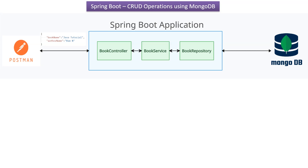On the left side you can see Postman. Using the Postman client we can send book details in JSON format. The Spring Boot application converts the JSON format of BookDetails to a BookObject, which is passed to BookController. BookController passes the BookObject to BookService, BookService passes it to BookRepository, and BookRepository saves it into MongoDB as JSON format. We will also see how to get, update, and delete BookDetails.